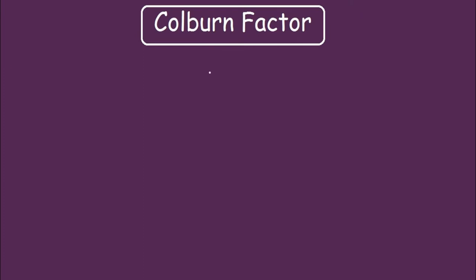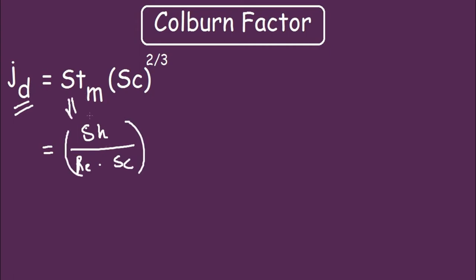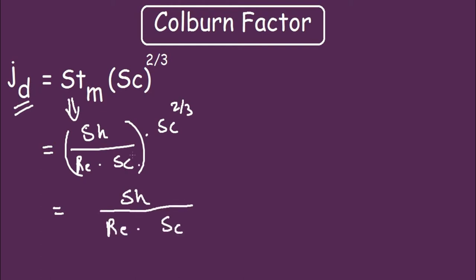Next is the Colburn factor. For mass transfer, the Colburn factor is represented by j_D. It equals Stanton number for mass times Schmidt number to the power 2/3. Substituting the Stanton number definition, this becomes Sherwood number divided by Reynolds number times Schmidt number, multiplied by Sc to the power 2/3, which simplifies to Sherwood number divided by Reynolds number times Schmidt number to the power 1/3.